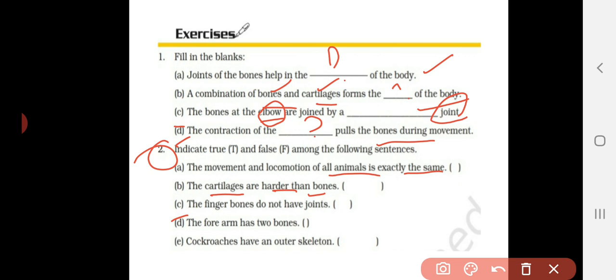Fourth question: the forearm has two bones. First you have to be very clear what is forearm and hinge joint, okay? So forearm, it has two bones. Think wisely and write the answer.